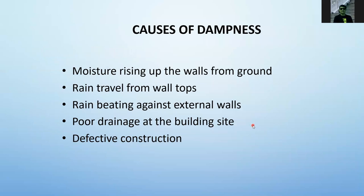The causes of dampness include moisture rising up walls from the ground, or rain traveling from wall tops downward. Rain beating against the external wall — if the wall does not have positive waterproofing, rain will cause dampness, usually seen on facades frequently exposed to rain. Poor drainage at the site of the building will also cause water to penetrate at ground floor level. Defective construction with many cracks will allow water penetration.